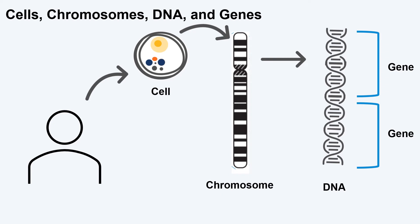Each of us have millions and millions of cells that make up our bodies. We have different types of cells such as skin cells, brain cells, and heart cells that act as our body's building blocks.